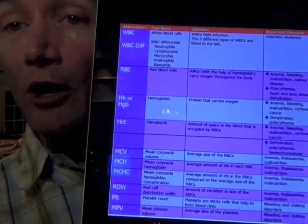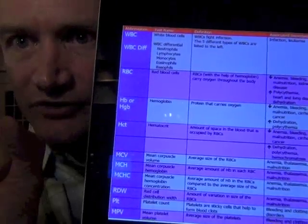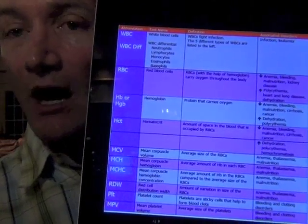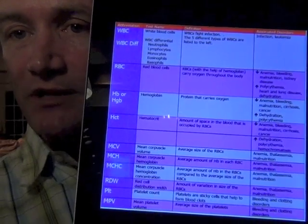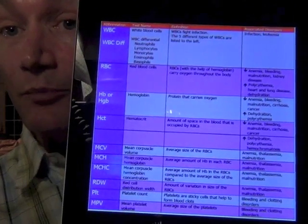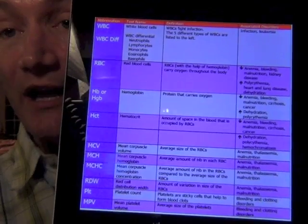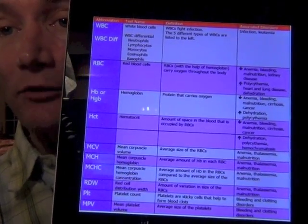The distribution width, the RDW, tells us do you have a bunch of small and fat red blood cells because it could be that you have two different types of deficiencies going on at the same time. And then one of the other tests is the platelet count. That tells us do you have enough of the platelets to help clot the blood and are they large enough and are they active enough.